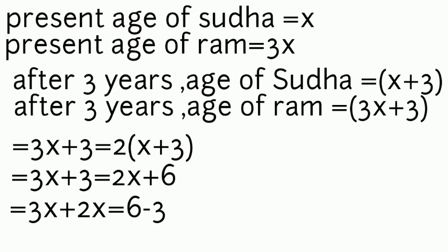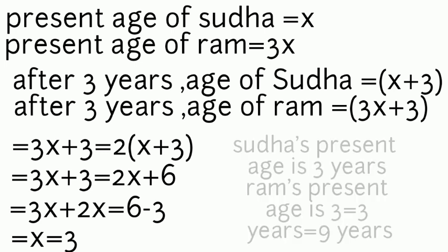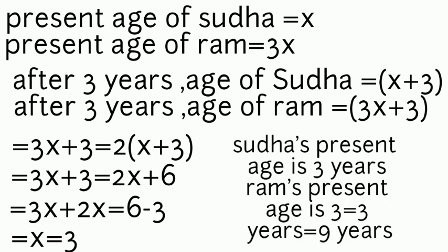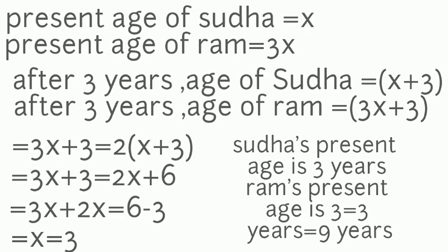We get x = 3. So Sudha's present age is 3 years and Ram's present age is 3 × 3 = 9 years. Let us go to the next example.